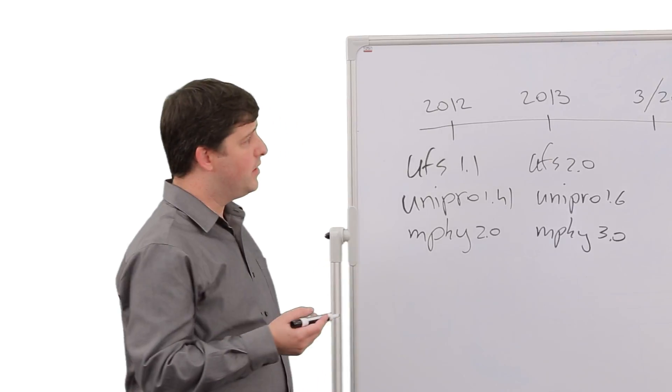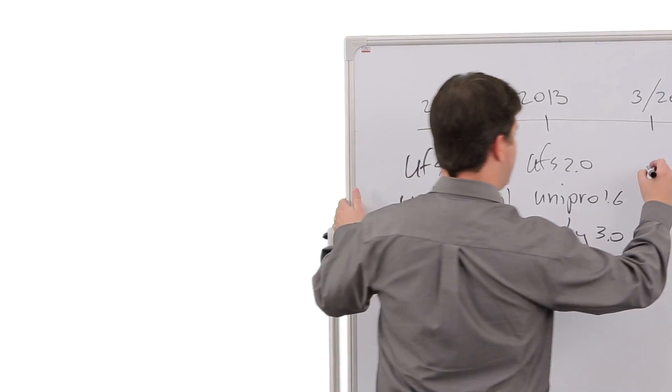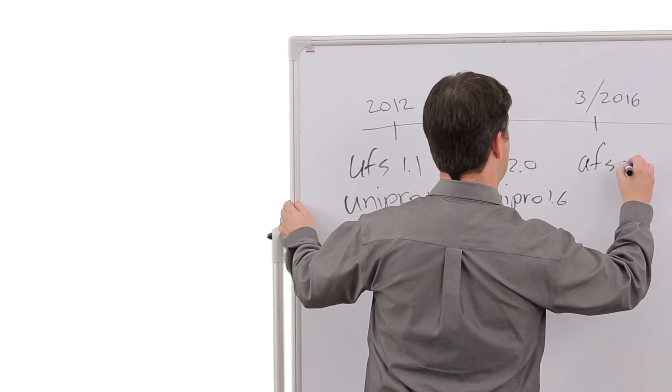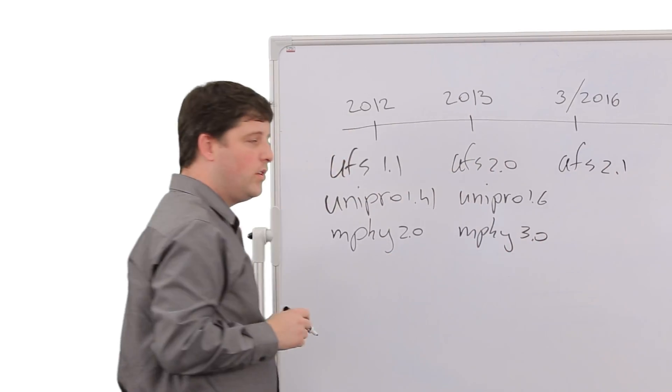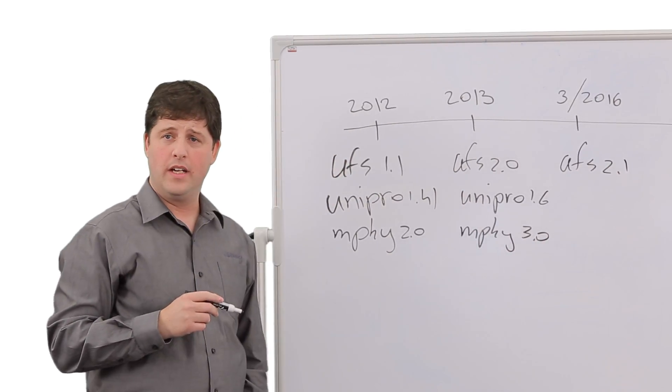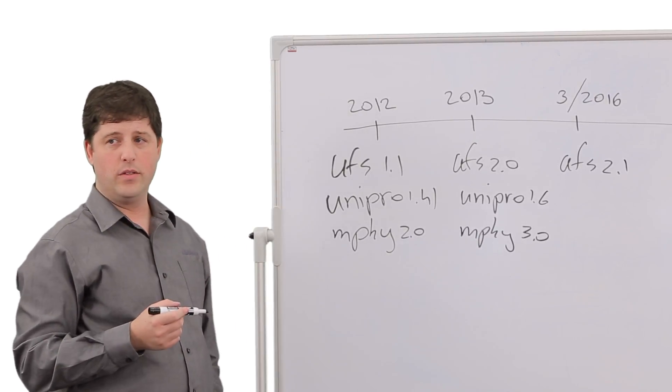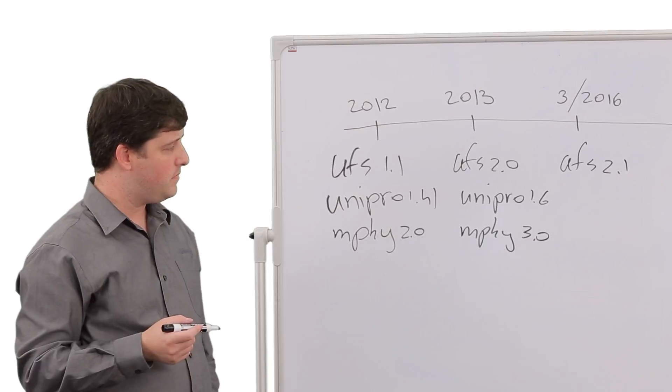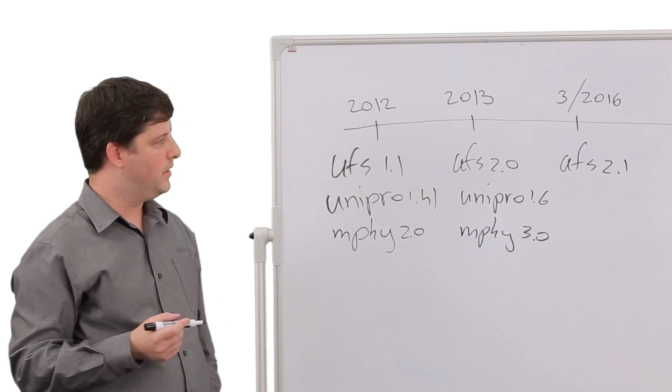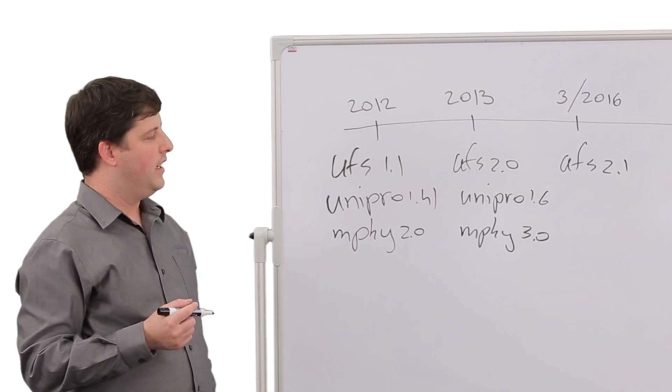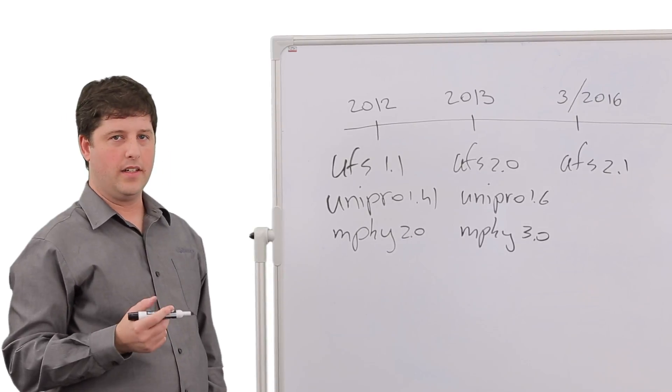At the beginning of 2016, UFS 2.1 was introduced, which is still using Unipro 1.6 and Mphi 3.0, but includes enhanced data security by using inline cryptography and a lot of other essential features to improve data transmission.